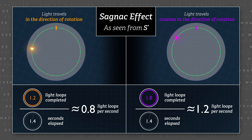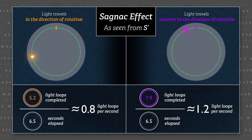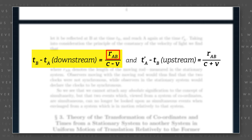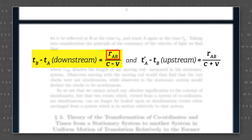From the perspective of observers in frame S-prime who do not know that their frame is rotating, light travels at different speeds over the same round-trip distance since they utilize just one clock. Einstein proposed in his 1905 relativity paper that downstream travel time in frame S is equal to the distance between two points R-sub-AB divided by speed C minus the speed of the reference frame V.